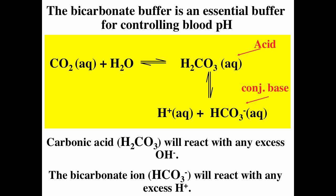An example of a buffer is the bicarbonate-carbonic acid buffer solution, which is present in blood to help control blood pH — though biological systems are a bit more complex. The carbonic acid will react with any excess hydroxide, and the bicarbonate ion will react with any excess hydrogen ion.